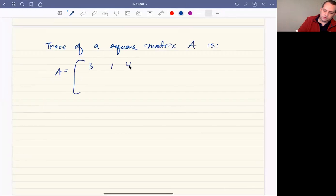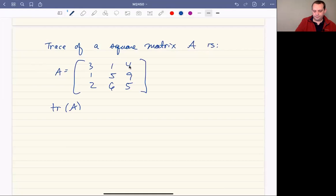Say you have 3, 1, 4, 1, 5, 9, 2, 6, 5 as your matrix. Then the trace of A, which is usually written tr(A), is going to be the sum of the diagonal values. So it's going to be 3 plus 5 plus 5, or 13.